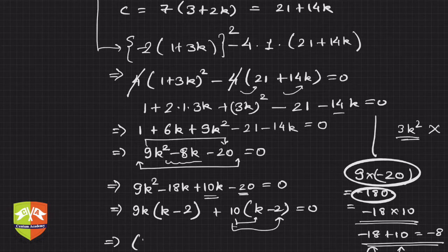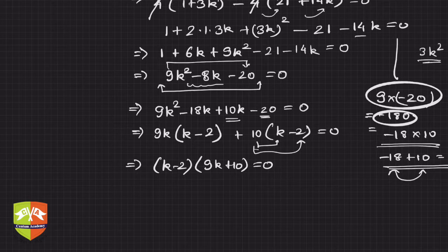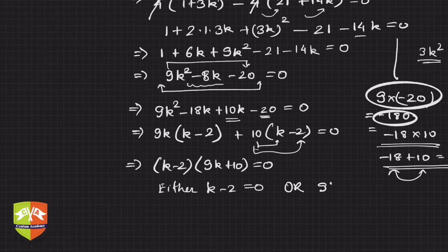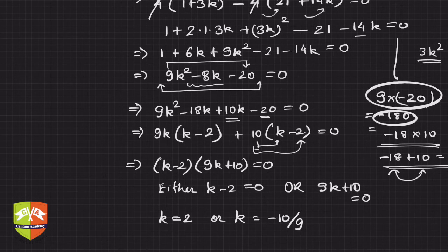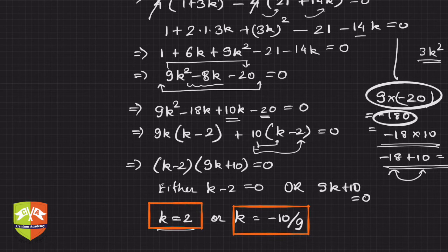Since (k minus 2) is a common factor, we get (k minus 2)(9k plus 10) equals zero. So either k minus 2 equals zero or 9k plus 10 equals zero. The values are k equals 2 or k equals minus 10 over 9. In either case, the given quadratic equation will have real and equal roots.